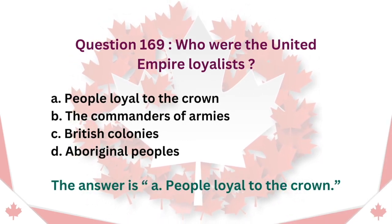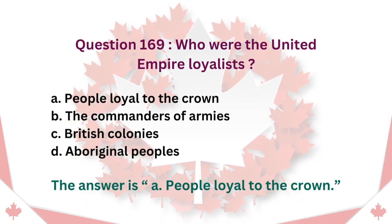Question 169: Who were the United Empire Loyalists? A. People Loyal to the Crown. B. The Commanders of Armies. C. British Colonies. D. Aboriginal Peoples. The answer is A. People Loyal to the Crown.